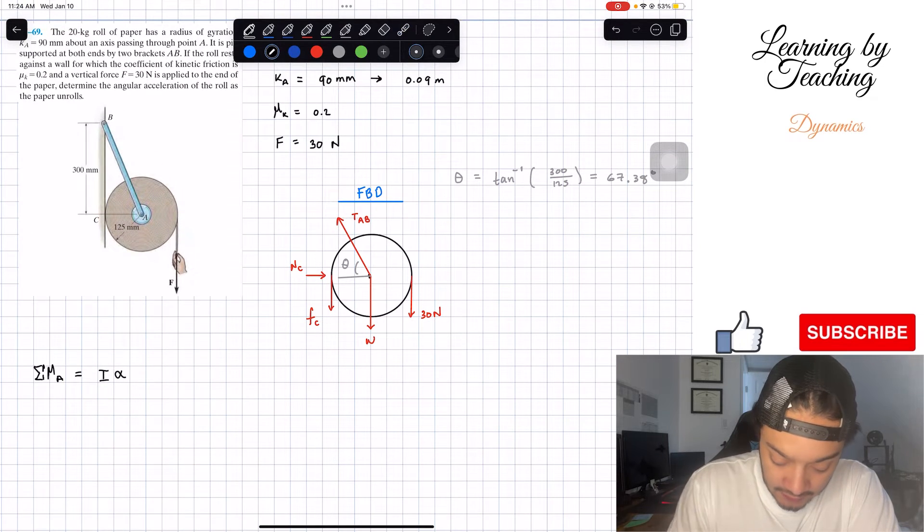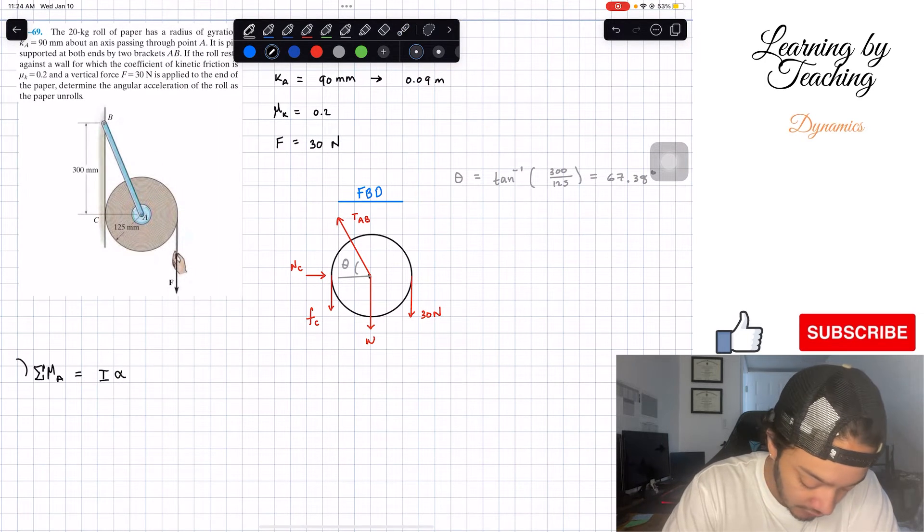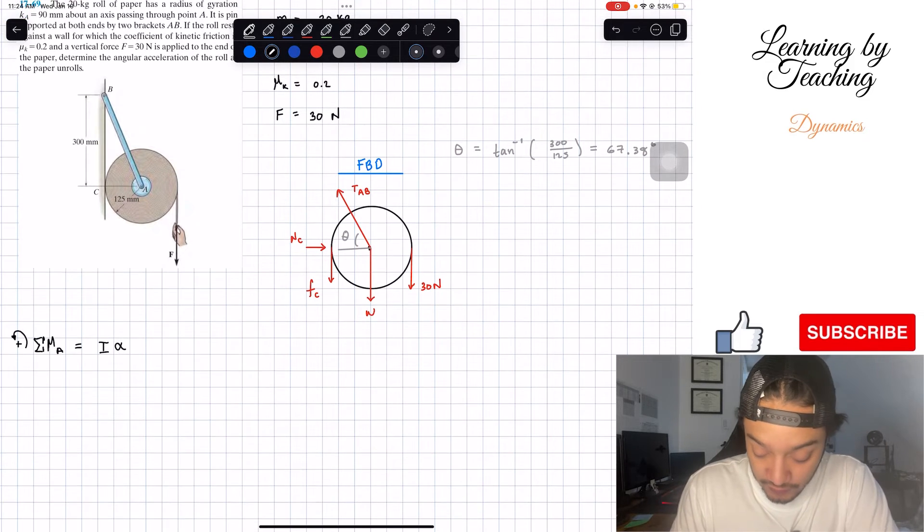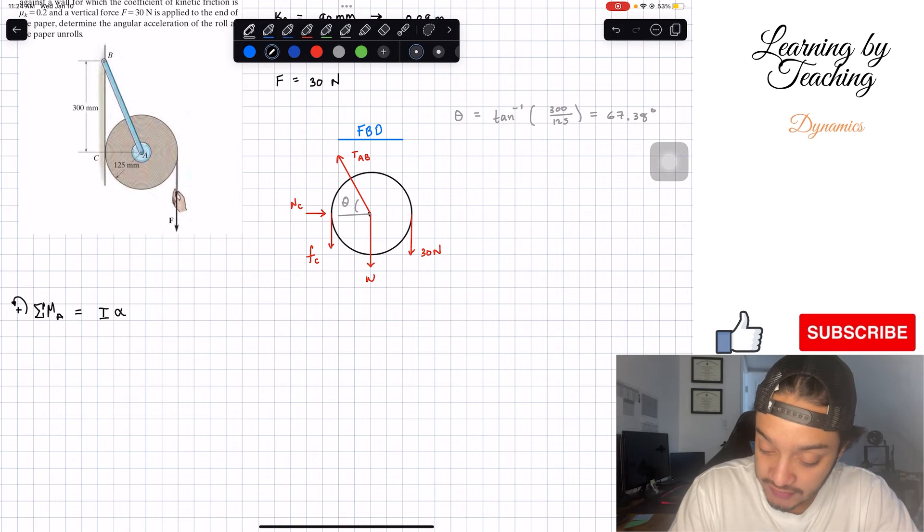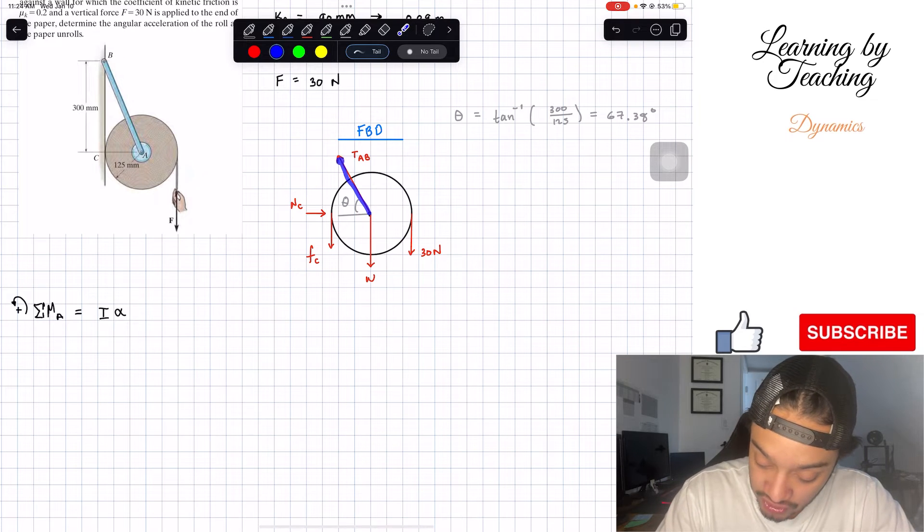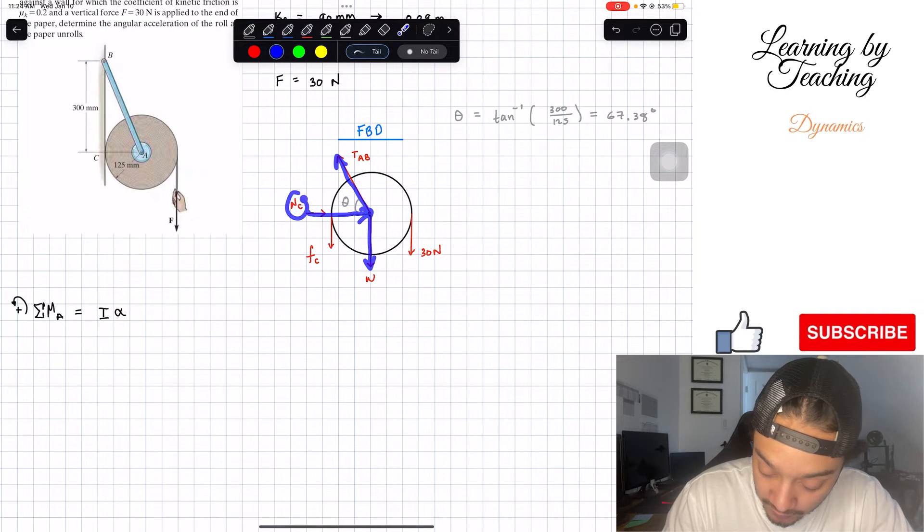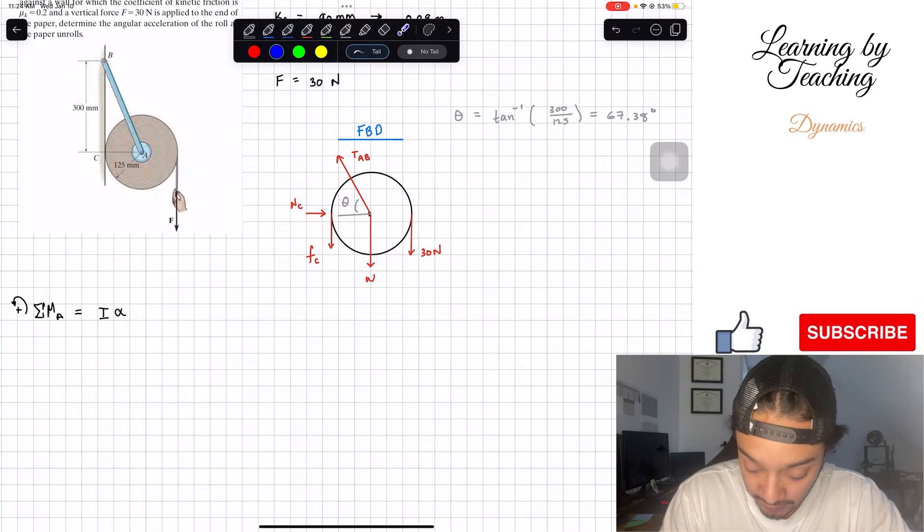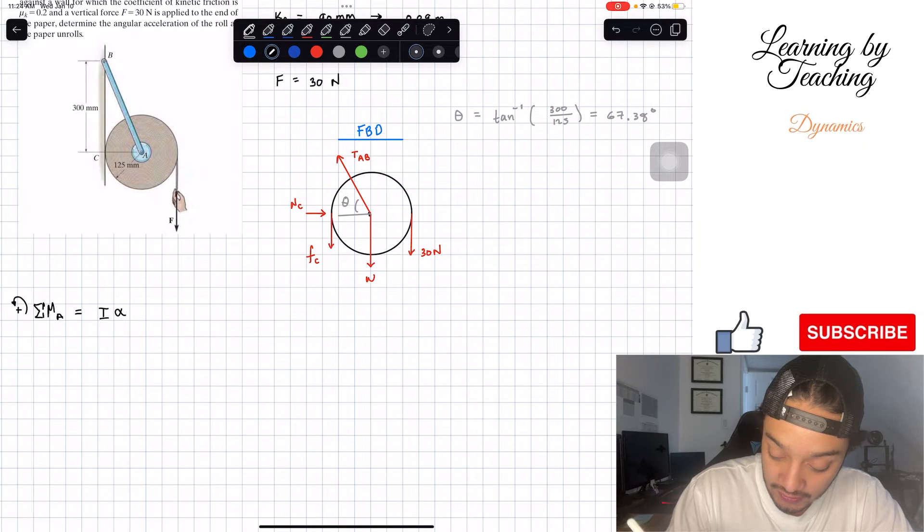Let's try to do this by assuming that going counterclockwise is positive. If we do the summation of moments, our tension AB passes through my point A, similarly with our weight and similarly with my normal at C. So neither of these three forces do a moment about my point A, so we only have the frictional force and our 30 newtons.